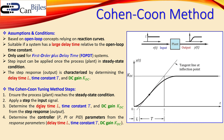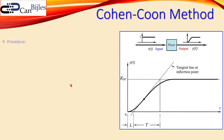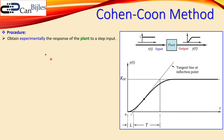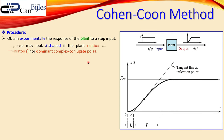Using the three parameters determined from the response, you can determine the controller parameters using a table. We obtain the plant behavior experimentally since we don't know the transfer function yet. There are conditions to consider: there must be no integrators and also no dominant complex conjugate poles. If there are complex conjugate poles, the response could have an overshoot and this method would not be valid.